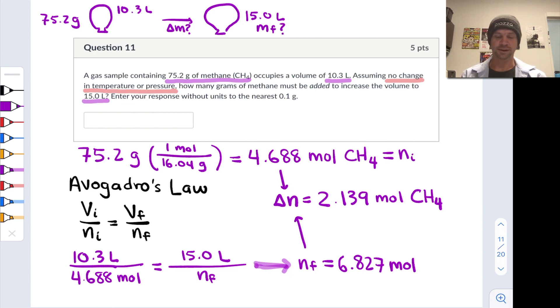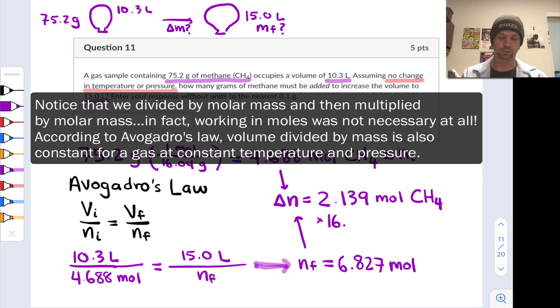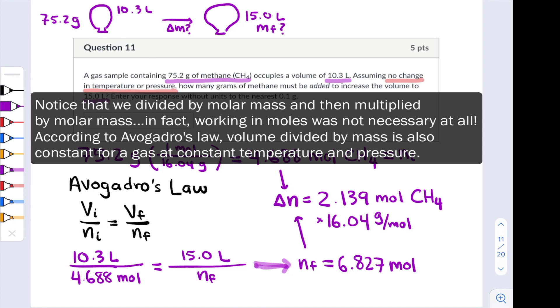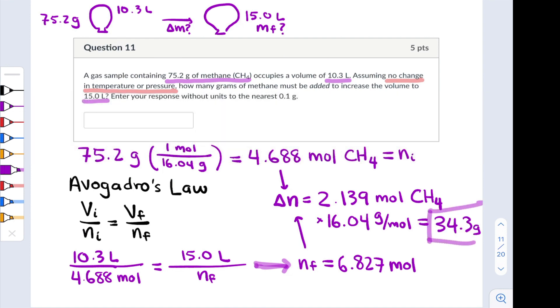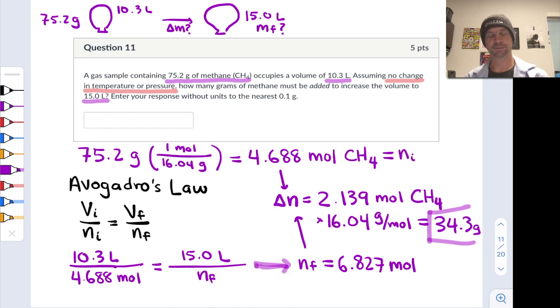What's the corresponding mass of that? We multiply by the molar mass of CH4, 16.04 grams per mole, and this comes out to 34.3 grams of methane that need to be added to the container to bring the volume up from 10.3 to 15 liters.